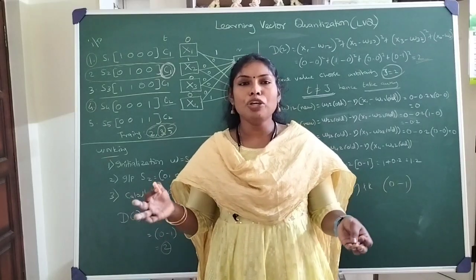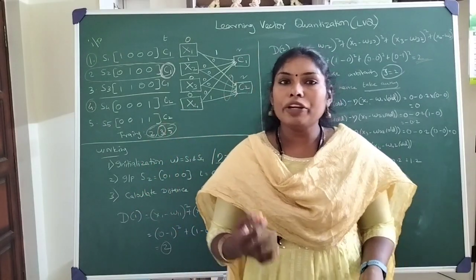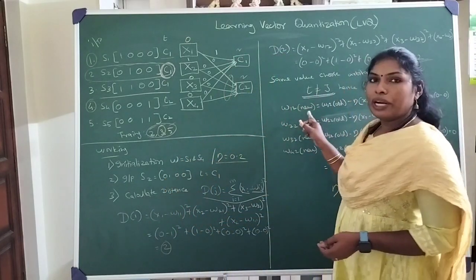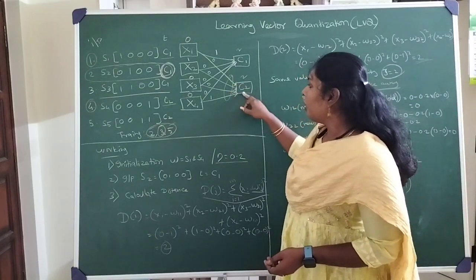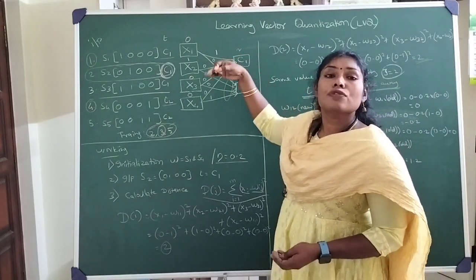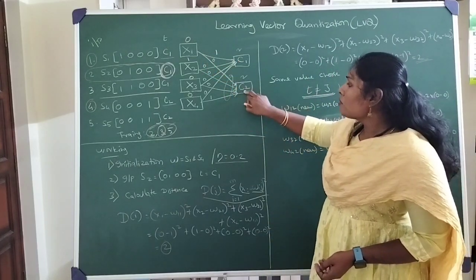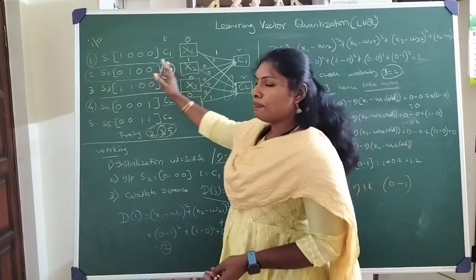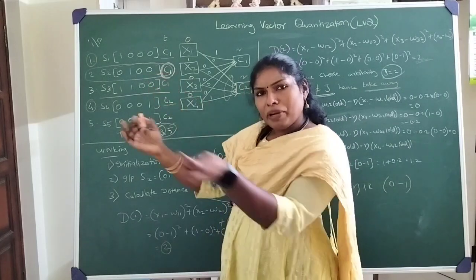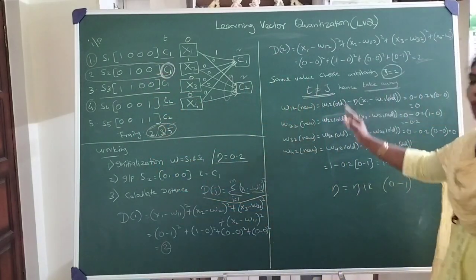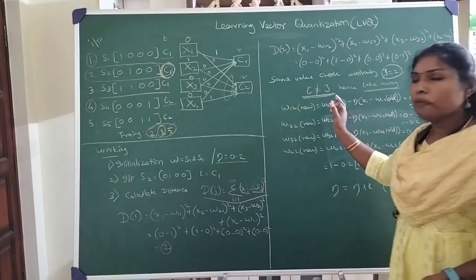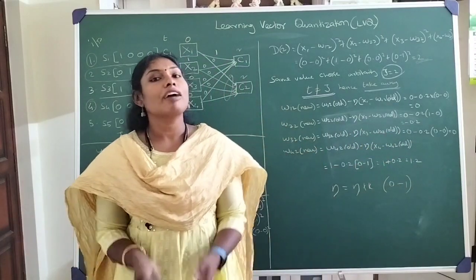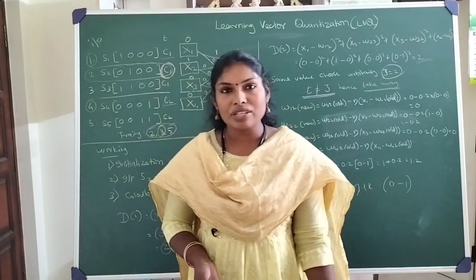The key difference between Self-Organizing Map (SOM) and Learning Vector Quantization: in SOM, we update the winning unit and its neighboring units — it preserves topology. In LVQ, only the winning unit is updated — with a positive value if correctly classified (bringing it closer) or a negative value if misclassified (pushing it away). This depends on the supervised target label.